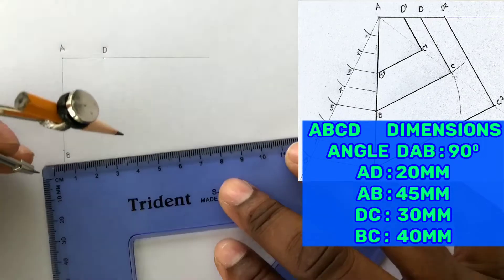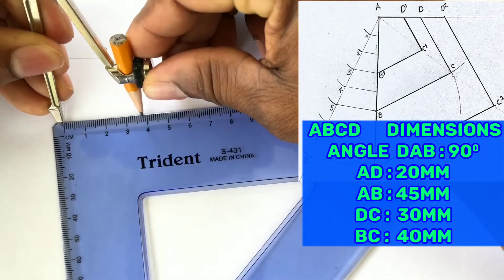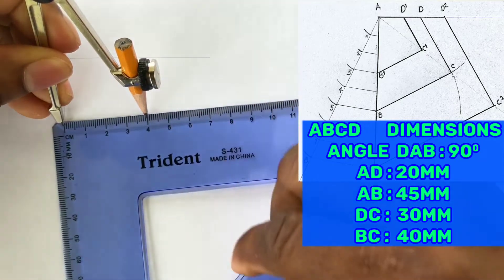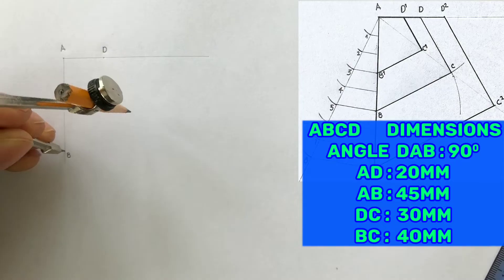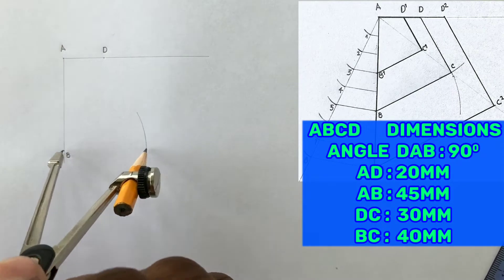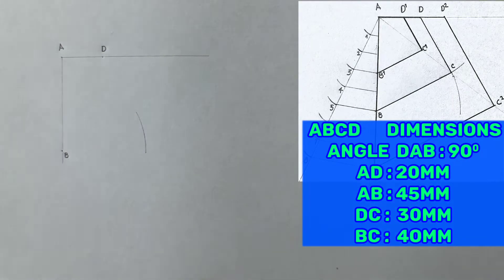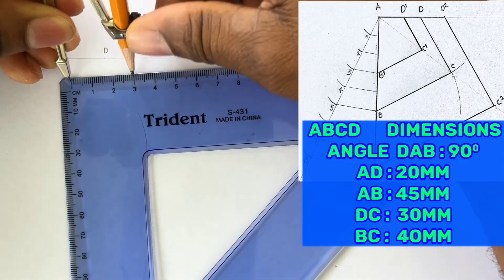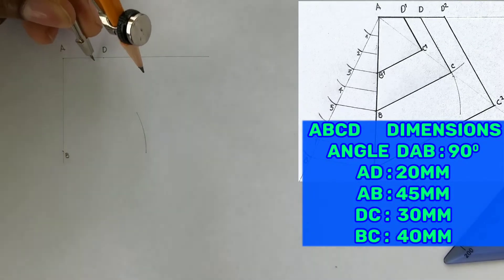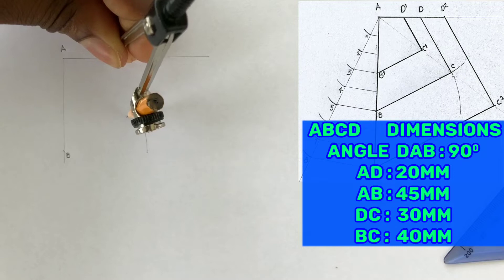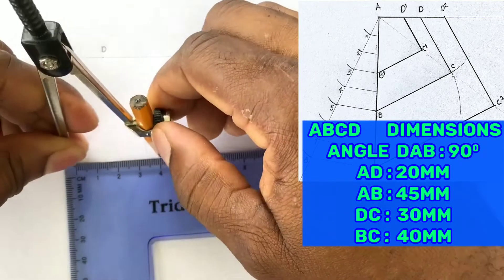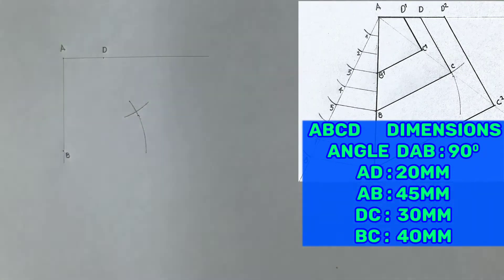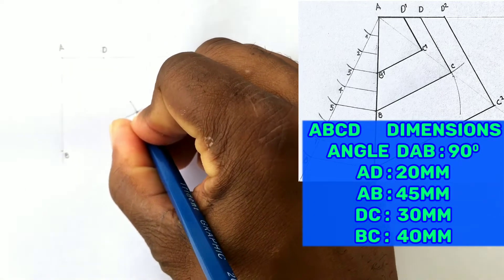You will now open your compass to a radius of 40 millimeters and from point B scribe an arc. Now open your compass to a radius of 30 millimeters and from point D scribe an arc to intersect the previous arc you drew. This intersection of arcs is now point C. Label point C.